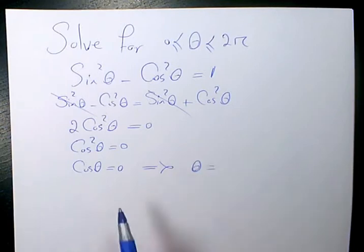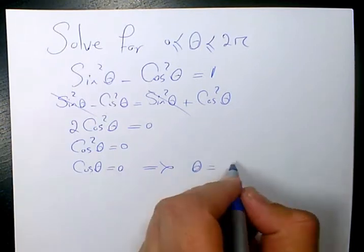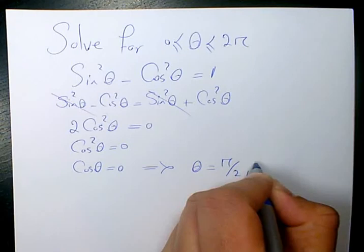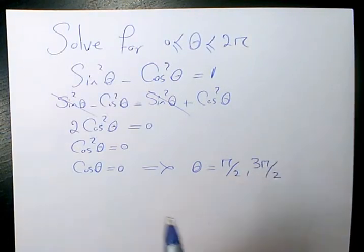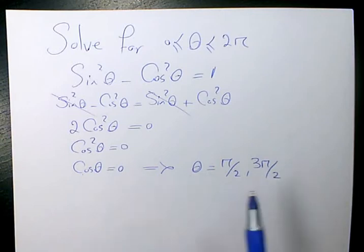What theta values make cosine equal to 0? π/2 and 3π/2. When cosπ/2 equals 0 and cos(3π/2) equals 0. π/2 is equivalent to 90 degrees and 3π/2 is equivalent to 270 degrees. So these are the two final answers to this question.